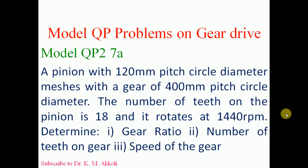Hello, I'll solve one numerical from the VTU model question paper on gear drive. The problem states that a pinion with 120 mm pitch circle diameter meshes with a gear of 400 mm pitch circle diameter. The number of teeth on the pinion is 18 and it rotates at 1440 rpm. Determine: first, the gear ratio; second, the number of teeth on the gear; third, the speed of the gear.